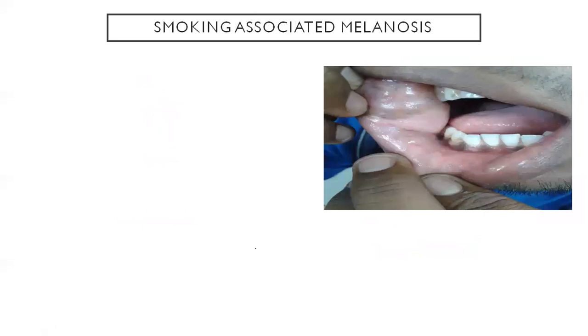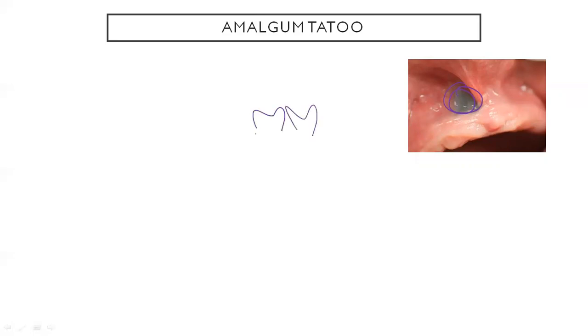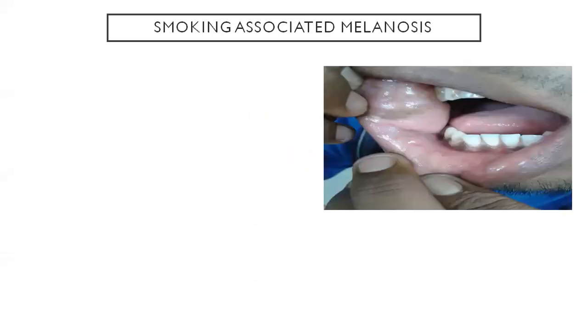Next we have amalgam tattoo. Amalgam gets implanted in the mucosa. On an x-ray you might notice some particles, and on examination it looks like amalgam. No biopsy is needed. Over time, amalgam may have been deposited due to improper condensation or leakage from a cavity preparation.